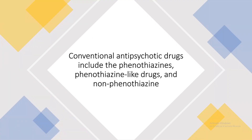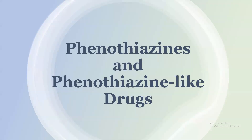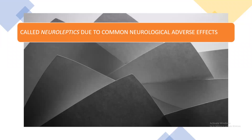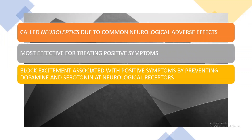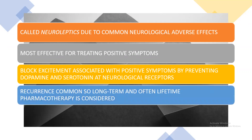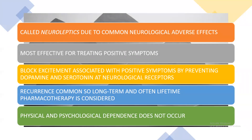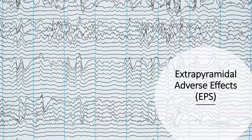Conventional antipsychotic drugs include phenothiazines and phenothiazine-like drugs, also called neuroleptics due to common neurological adverse effects. They are most effective for treating positive symptoms and block dopamine and serotonin at neurological receptors. Recurrence is common, so long-term or lifetime pharmacotherapy is often considered. Physical and psychological dependence does not occur with these drugs, but they do have extrapyramidal adverse effects.